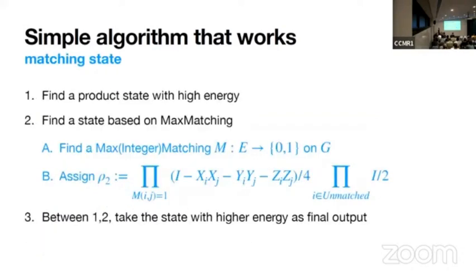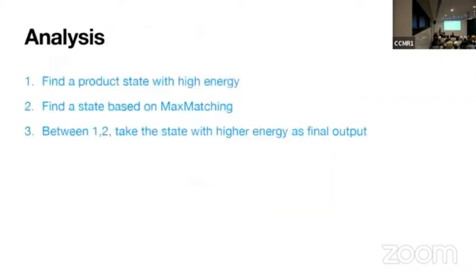And for the matching part, find the maximum integer matching. You can do this efficiently. And get the matching. And assign a product of two qubit states, which is a singlet state on matched edges and uniformly random state on unmatched qubits.